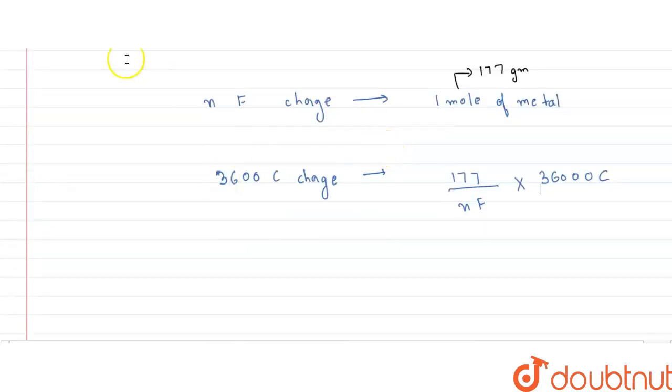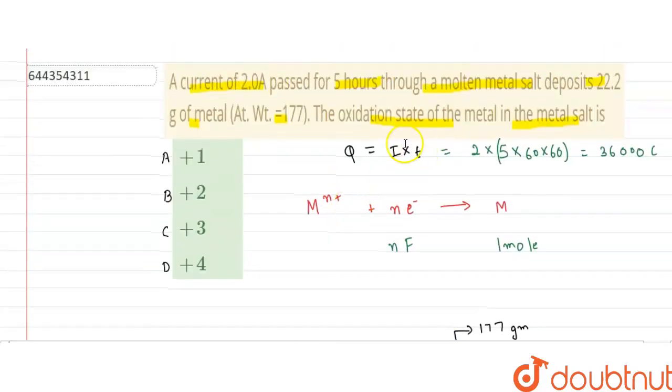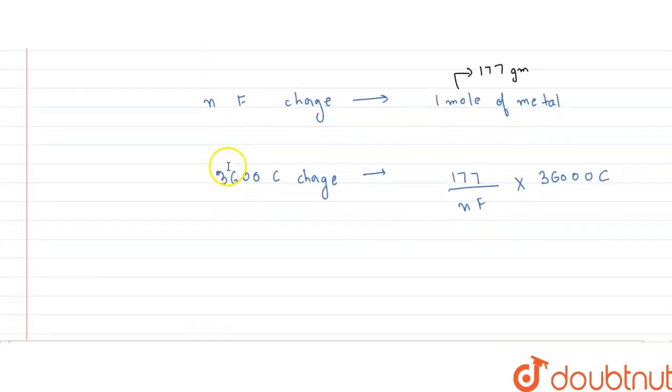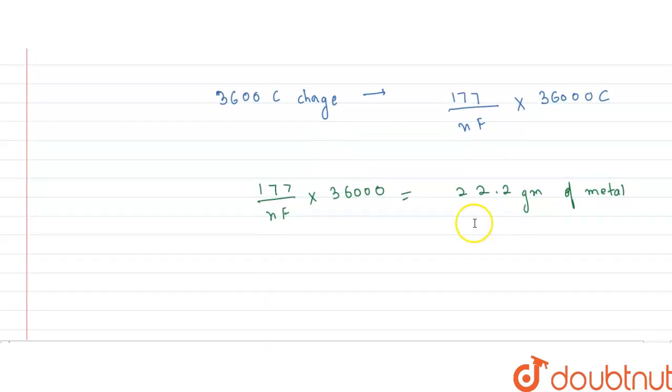For that, in the question itself we have been given that this particular charge is nothing but equal to the salt deposit. Let me write: it is equal to the 22.2 grams of salt deposited on the metal. So I can rewrite this as 177 upon nF into 36,000 coulomb is equal to 22.2 grams of metal, because this much amount is being deposited.